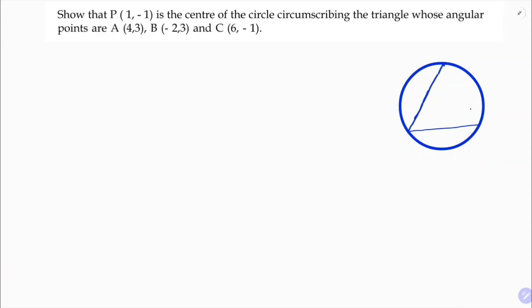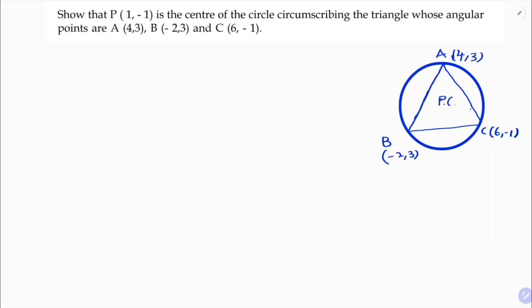I need to prove this. The vertices are: A is (4, 3), B is (-2, 3), and C is (6, -1). The center P is the point (1, -1). I need to find the distance from center P to each vertex.